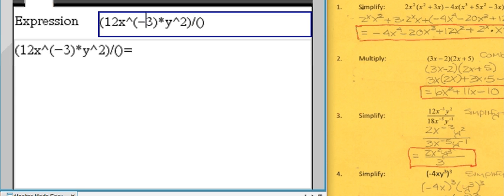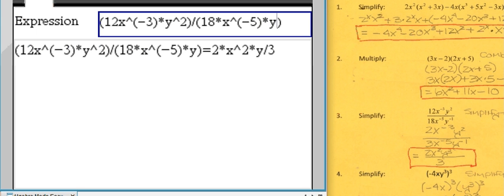The number of parentheses have to match, to close to open. If the matches are not right, then we will not get the correct answer. The bottom: 18 times x raised to the negative 5 times y raised to the negative 1. I use parentheses for the exponents, and we can see the final answer is 2x²y³ divided by 3.